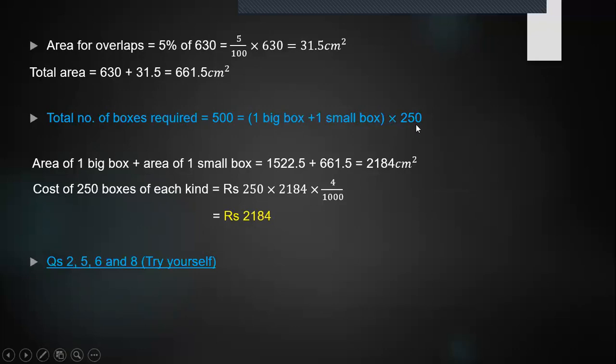So you are going to multiply this area with 250. The cost of 250 boxes of each kind is going to be 250 × 2184 × 4/1000. Now, 250 × 4 is 1000, which gets canceled with the 1000 in the denominator, and you get the cost as Rs 2184.